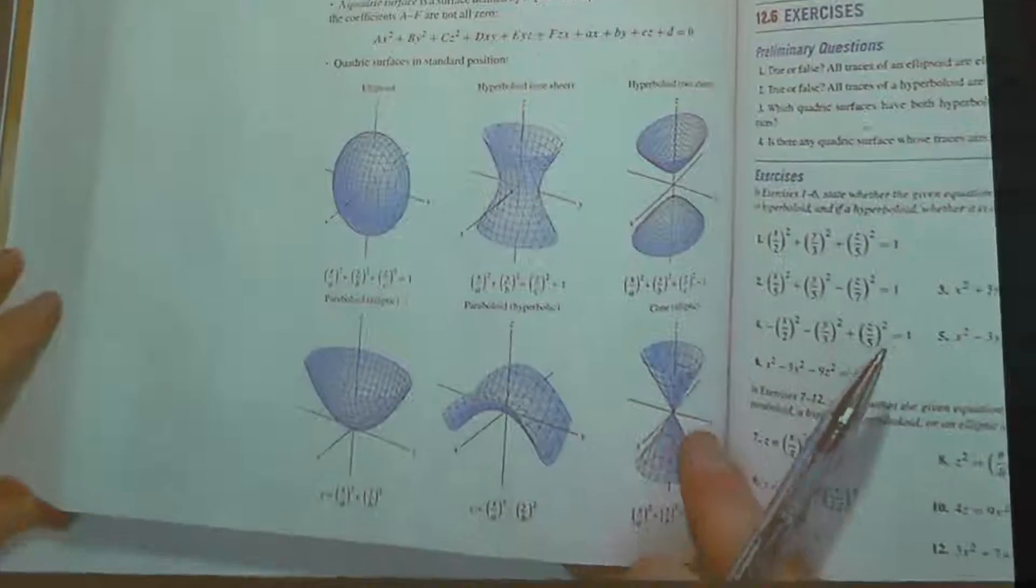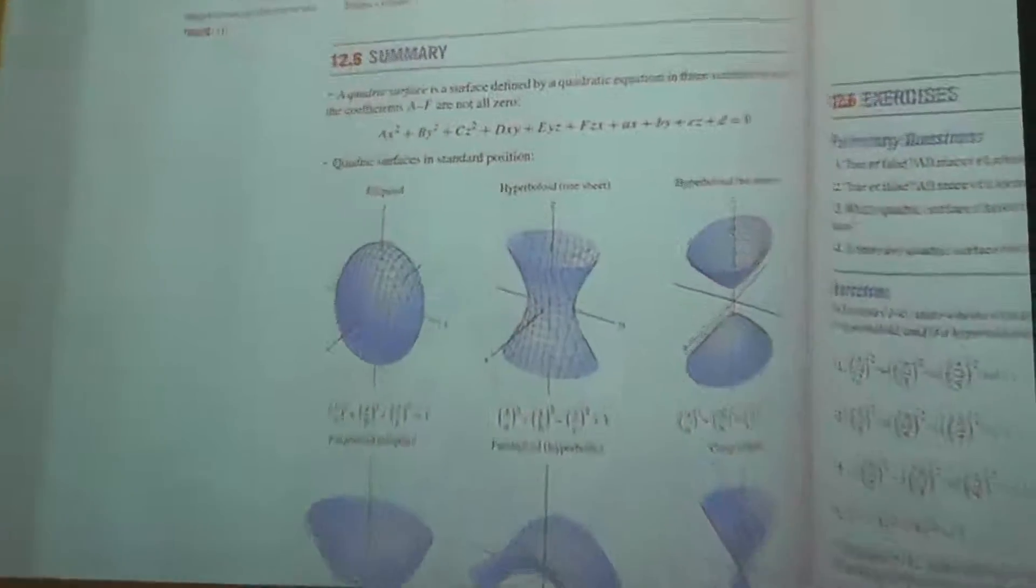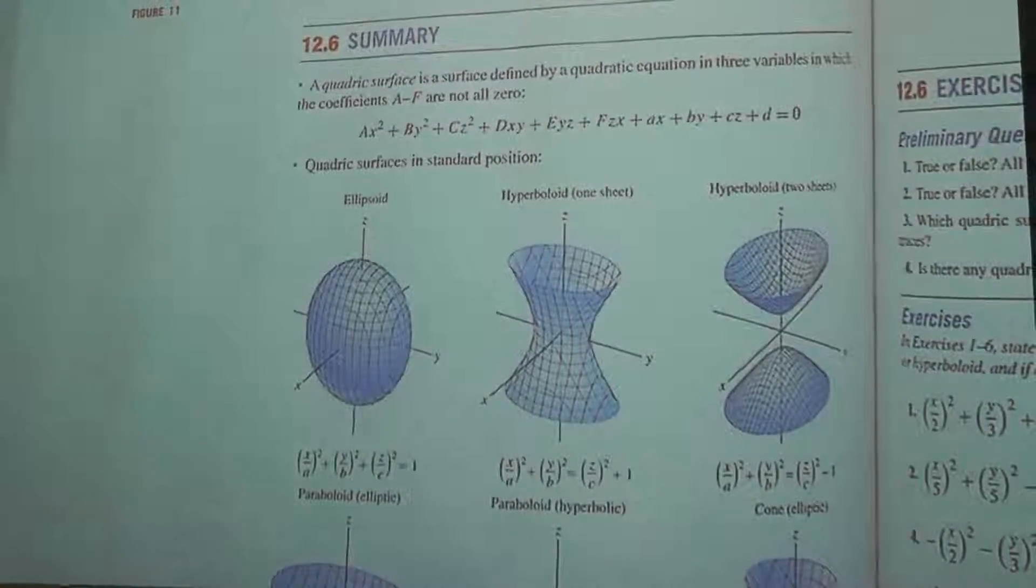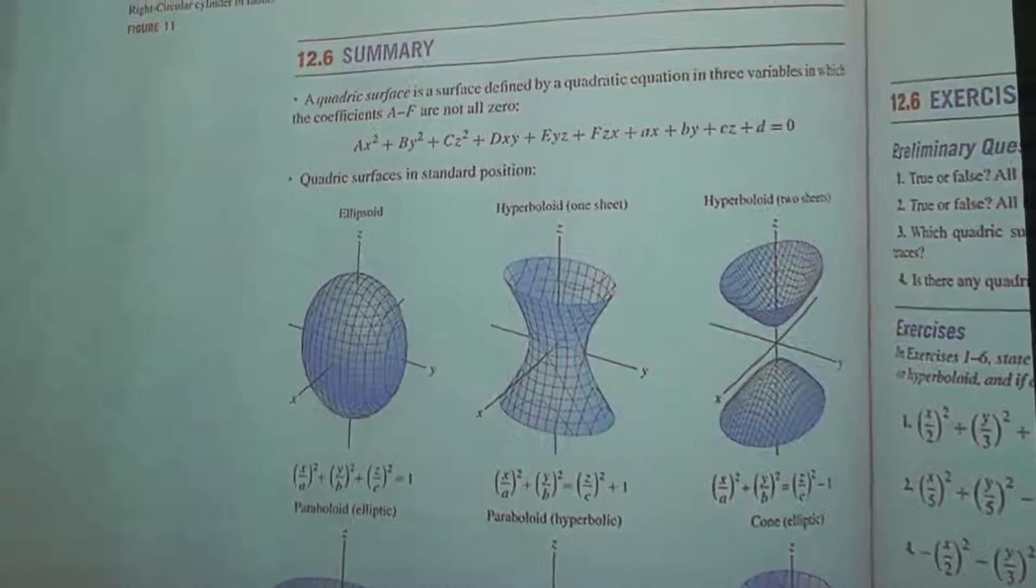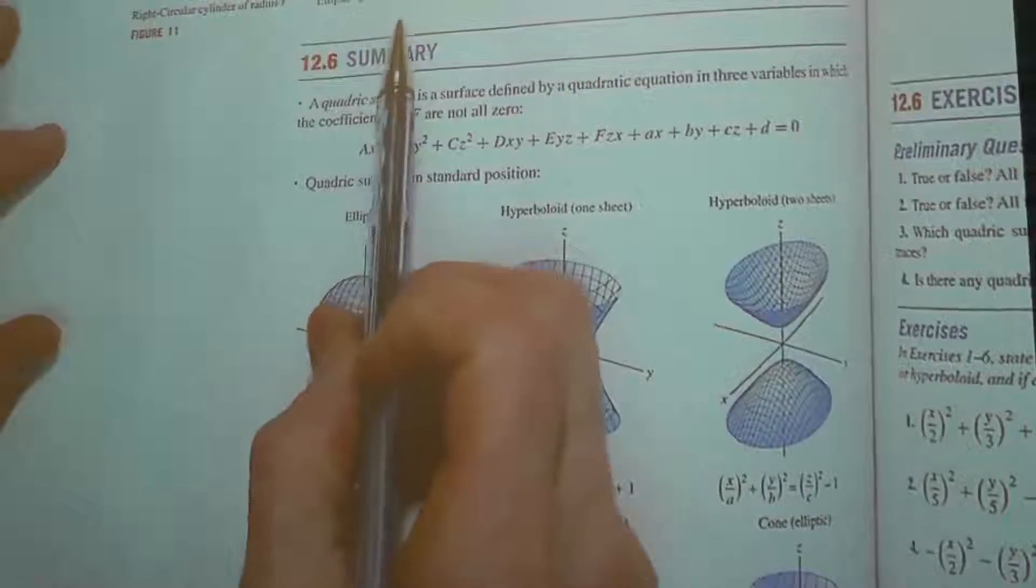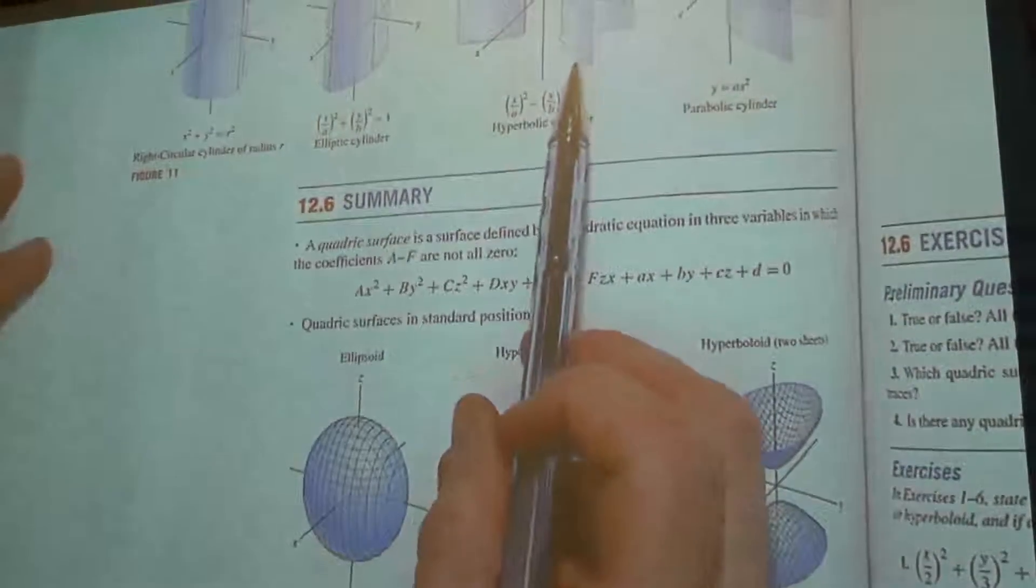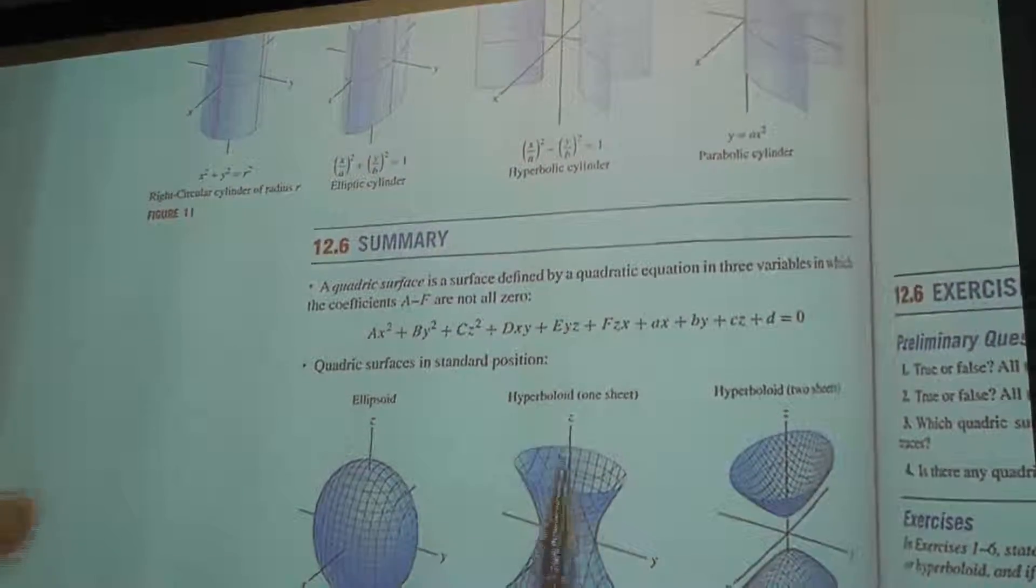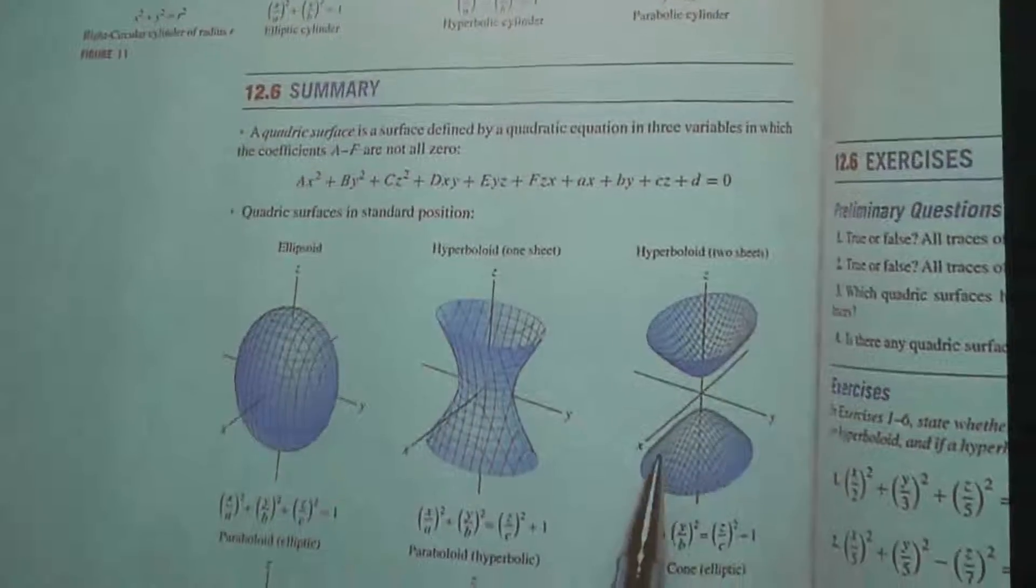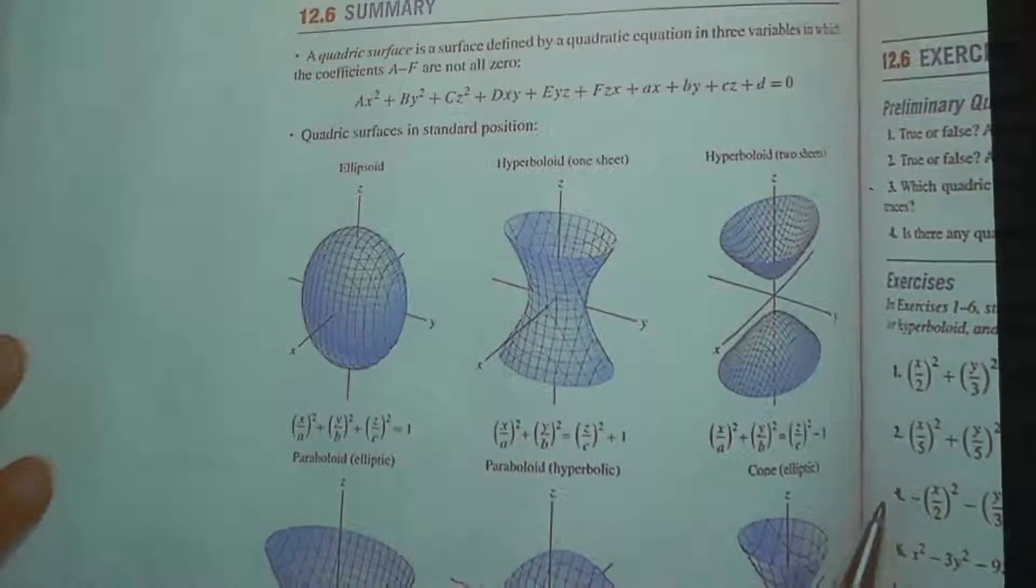So these shapes are sitting in the book. The book gives them all really nice names. What page is that? The 710. It's sitting in section 12... Yeah. So you get elliptic cylinders and hyperbolic cylinders that don't even look like cylinders. Down here, ellipsoid. Hyperboloid one sheet. This is a hyperboloid of two sheets. I mean, they're words. Hyperboloid. I don't ever remember the words because I can't remember anything.